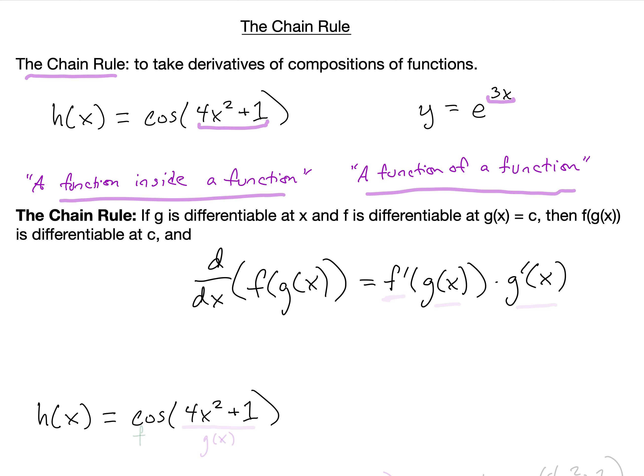Here is the chain rule. It says that if g is differentiable at x and f is differentiable at g of x equals a point c, then f of g of x is differentiable at c, and the derivative with respect to x of f of g of x is equal to the derivative of f evaluated at g of x times the derivative of g of x. So when we take the derivative of f of g of x, we take the derivative of the outside function, leave the inside function alone, and then multiply by the derivative of the inside function.